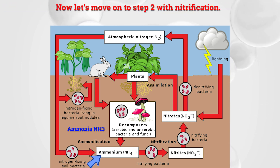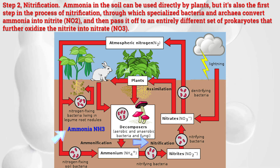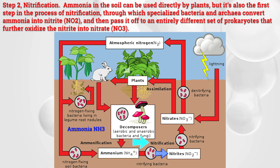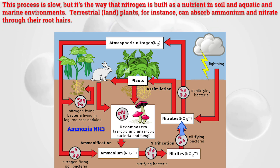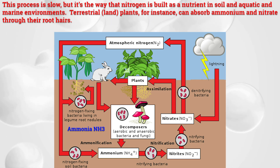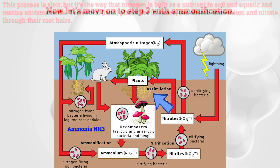Step two: nitrification. Ammonia in the soil can be used directly by plants, but it's also the first step in nitrification, through which specialized bacteria and archaea convert ammonia into nitrite (NO2), then pass it to a different set of prokaryotes that further oxidize the nitrite into nitrate (NO3). This process is slow, but it's how nitrogen is built as a nutrient in soil, aquatic, and marine environments. Terrestrial plants can absorb ammonium and nitrate through their root hairs.